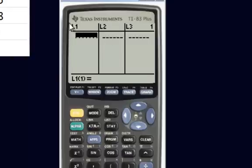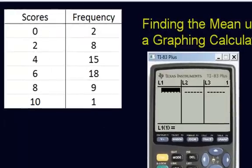In the first column, L1, we're going to put the scores. So we get 0, 2, 4, 6, 8, and 10.